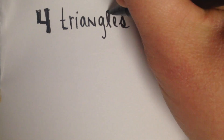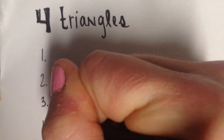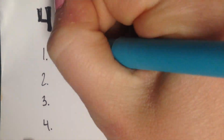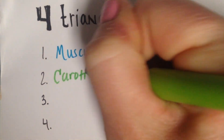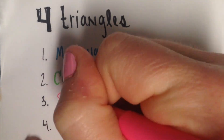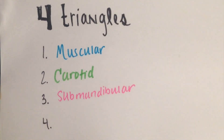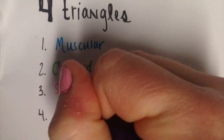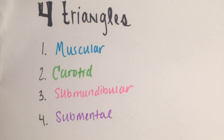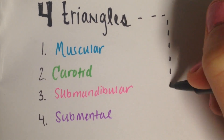We're going to start off by talking about the four triangles that we have in the anterior neck. First we have our muscular, we also have our carotid, and our submandibular, and lastly we have our submental.